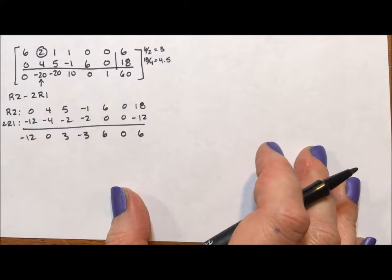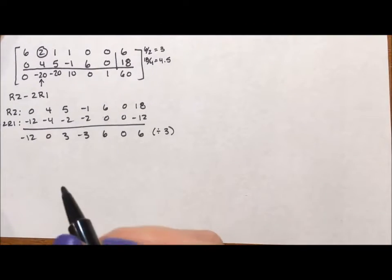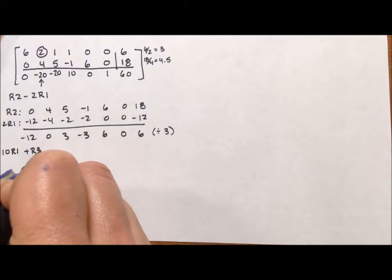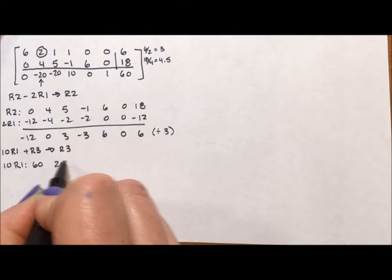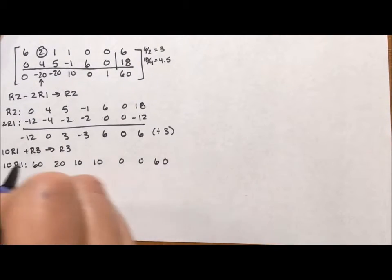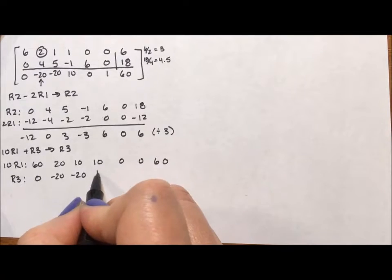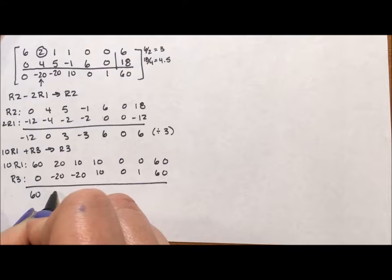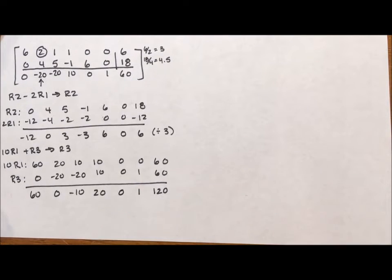Whereas I usually just leave my numbers as they are, I don't really worry about them because these are all divisible by 3. I will divide by 3 just to make my numbers a little bit smaller. To get rid of that negative 20, I'm going to take 10 times row 1 plus row 1, 60, 20, 10, 10, 0, 0, 60. Row 3, 0, negative 20, negative 20, 10, 0, 1, 60. And when I add these together, I am going to get 60, 0, negative 10, 20, 0, 1, 120.